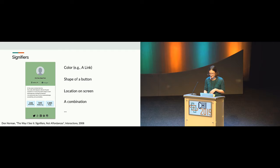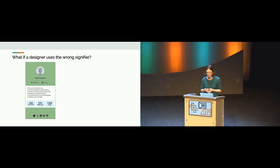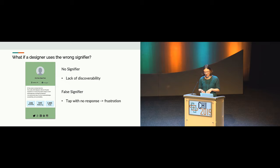If a designer uses the wrong signifier, it can result in poor usability. If there's no signifier to tap on something, the user can miss out on a potentially useful feature. And if a designer uses a false signifier, users may tap on elements and get no response, which can lead to frustration and poor usability.